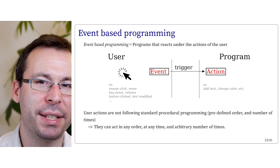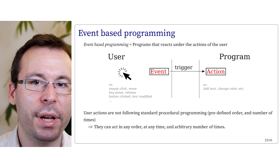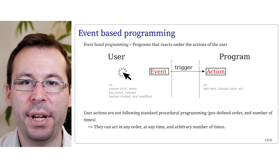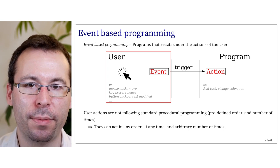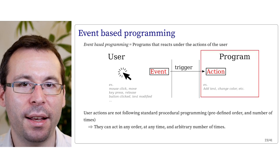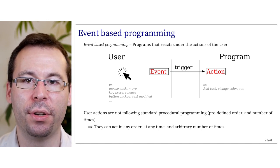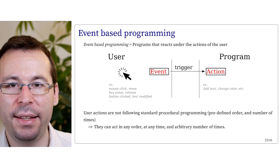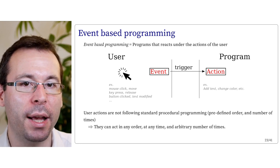When dealing with events, we have to understand a certain logic, which is a bit different from procedural programming. We call this event-based programming — how to program code that handles reactions to user actions. The principle is: on one side, the user generates events — typically mouse clicks, mouse movement, pressing or releasing a keyboard key, clicking a button, modifying text, and so on. These events, when they take place, need to be associated to some action. We say the event triggers an action, such as a color change or the creation of new elements. Note that user actions don't follow standard procedural programming — we cannot predict a specific order or number of calls. They can act when the user wants, in arbitrary order, at any time, and an arbitrary number of times.